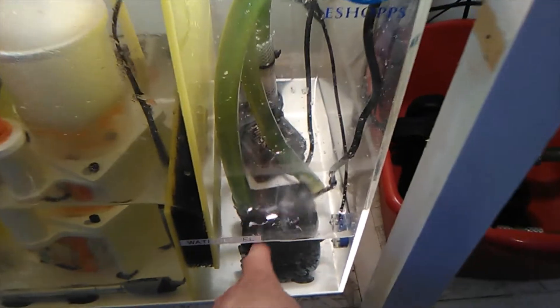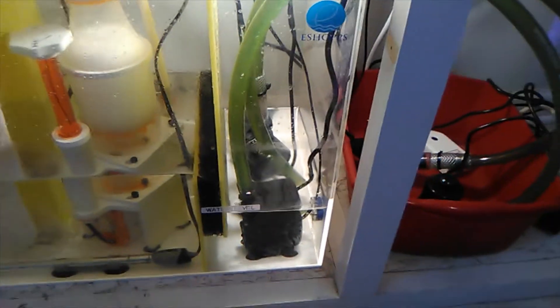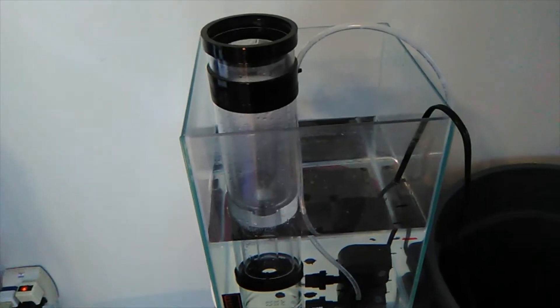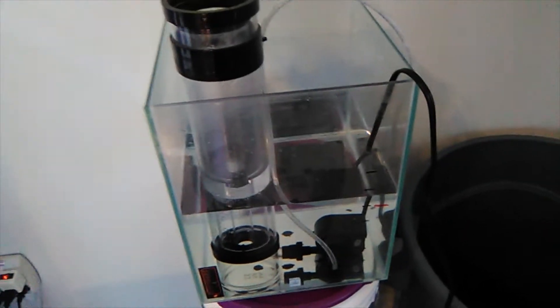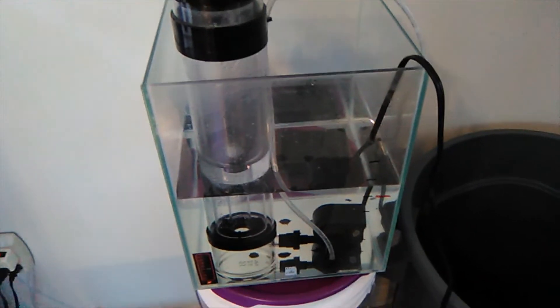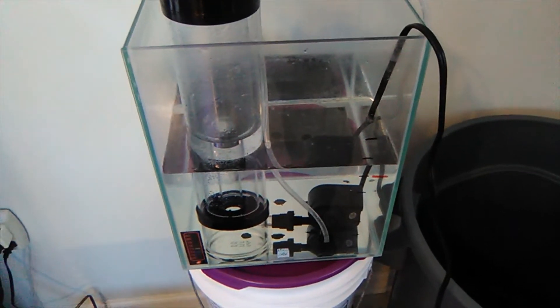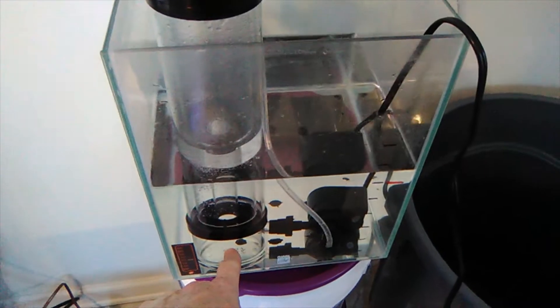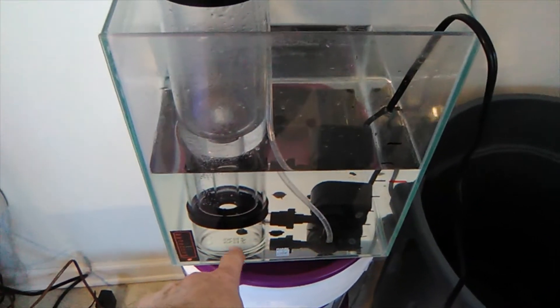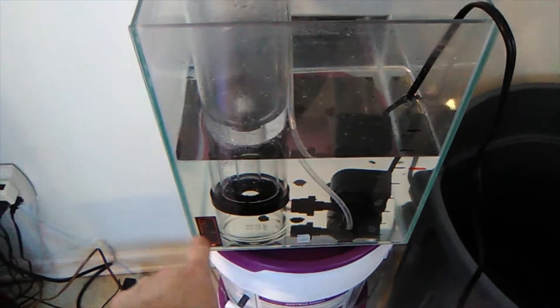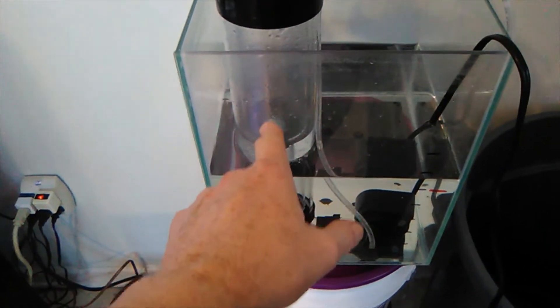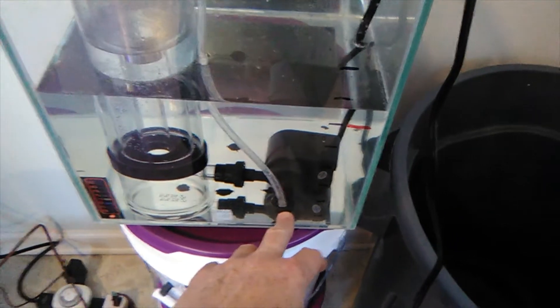So I dug out my old infamous and dreaded cyclone protein skimmer. This is a very old one, and this is a classic venturi protein skimmer. It has a power head which is going to shoot the water into a chamber on the bottom that's offset, and it's going to create a vortex coming up while injecting air through this tube through the power head.